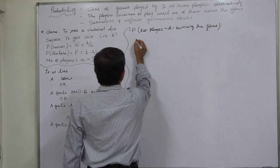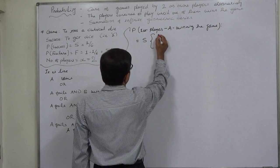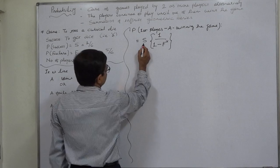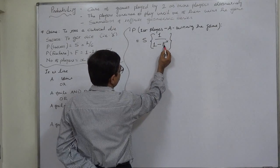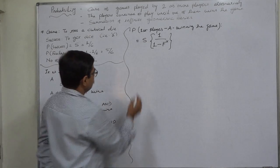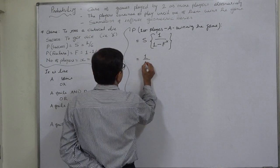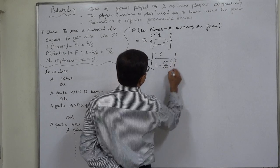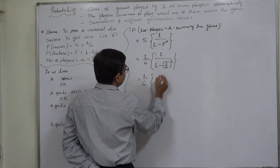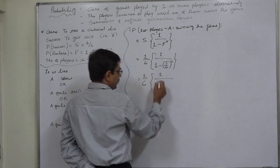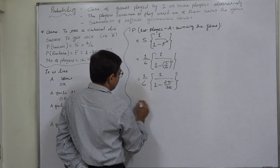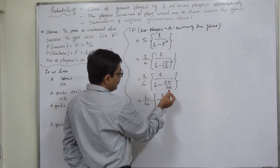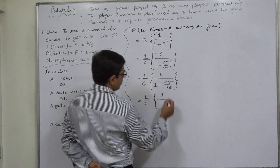The formula is: probability of first player winning = S × 1/(1 − F^x), where S is the probability of success, F is the probability of failure, and x is the number of players. Let us solve this: (1/6) × 1/(1 − (5/6)²) = (1/6) × 1/(1 − 25/36) = (1/6) × 1/(11/36).